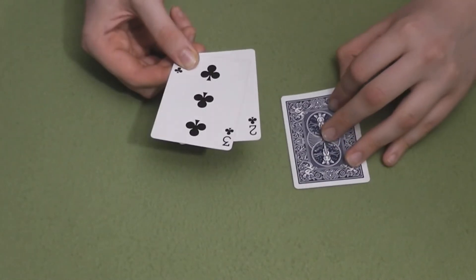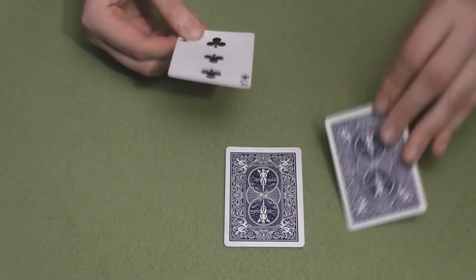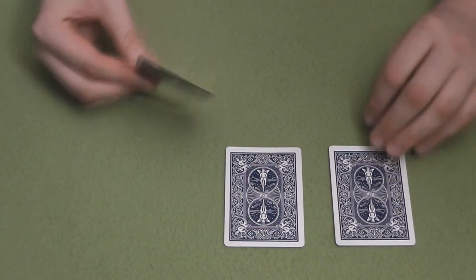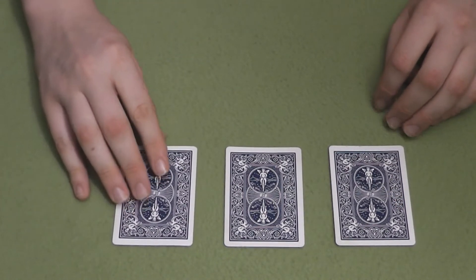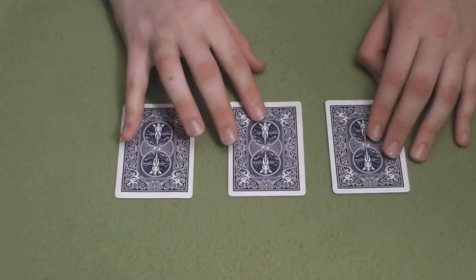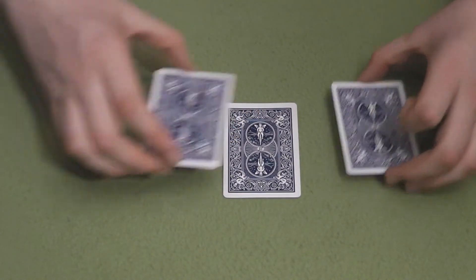I'll go ahead and put the Ace in the middle, the two on the right, and the three on the left. Also, make sure you don't get lured in by that three. Watch the Ace.